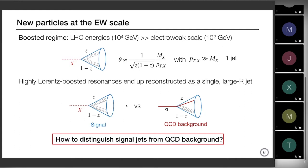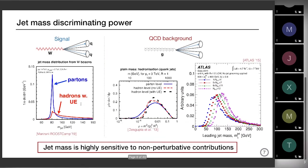The problem is: how do you distinguish this kind of new physics signal from the regular QCD background, where soft and collinear singularities mean decaying products are always collimated? One obvious thing would be — if you cannot resolve the two jets, take this jet and measure the mass. The mass of this jet should be identical to the resonance, while for QCD there is no intrinsic mass scale so the distribution is smooth. However, the jet mass is highly sensitive to all the non-perturbative contributions I described — hadronization, pileup, underlying event.